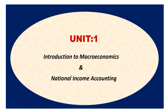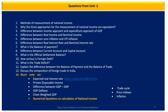The first unit is introduction to macroeconomics and national income accounting. Unit one is divided into two parts: the measurement of national income and the second part on foreign trade. In the methods of measurement of national income, you learn what are the three methods — the production method, the income method, and the expenditure method — and why the three approaches for the measurement of national income are equivalent.